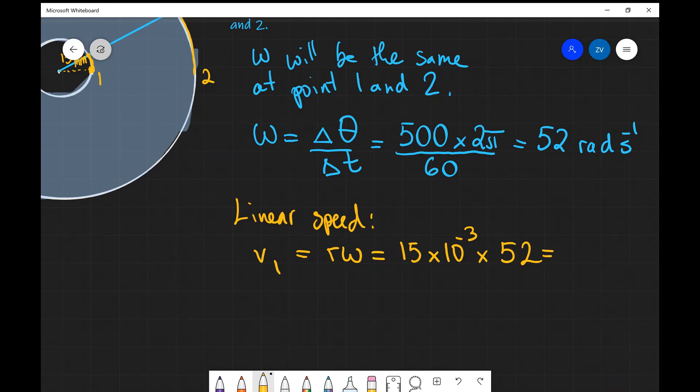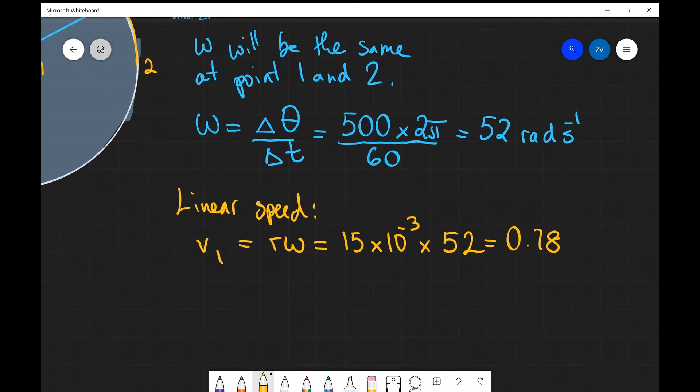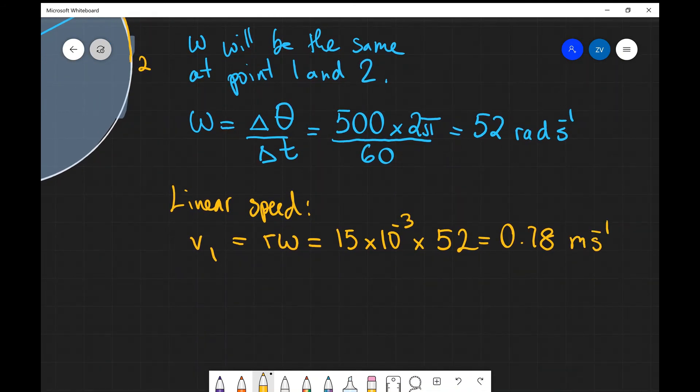And if we put those into a scientific calculator, it's going to be 15 times 10 to the power of minus 3 multiplied by 52. This is going to give us 0.78 meters per second.